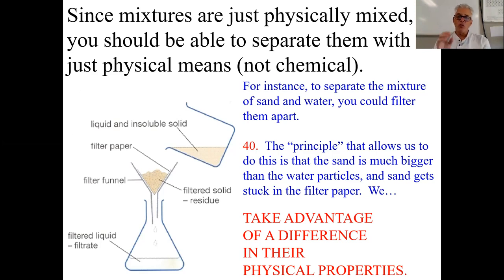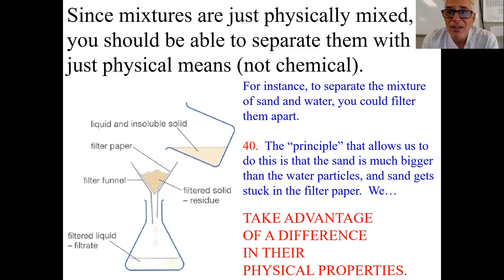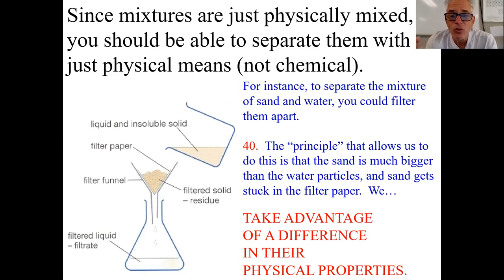The key principle here: in order to separate a physically blended mixture, you need to take advantage of a difference in their physical properties. Some things mixed together have very similar properties and are hard to separate by filtration. For example, you can't separate sugar from water with a filter — the sugar particles are so small they pass right through. You need to take advantage of a difference in properties that you can actually manage.